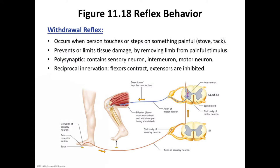For example, the biceps brachii are innervated by the musculocutaneous nerve with axons originating from C5, C6, and C7. Similarly, the gastrocnemius is innervated by the tibial nerve with axons originating from S1 and S2. At the same time, some incoming sensory impulses stimulate interneurons that inhibit the action of the antagonistic extensor muscles — this is reciprocal innervation. This inhibition of the antagonists allows the flexor muscles to effectively withdraw the affected part of the body.